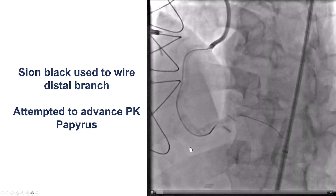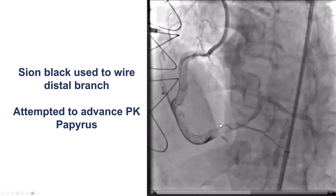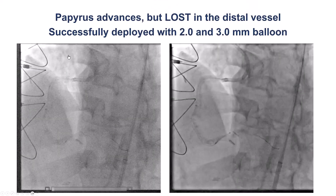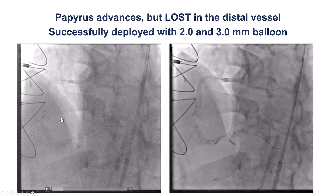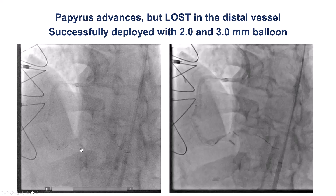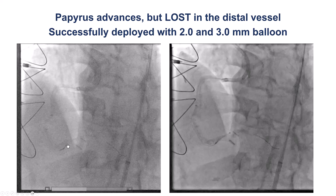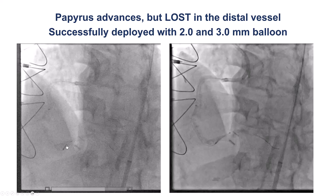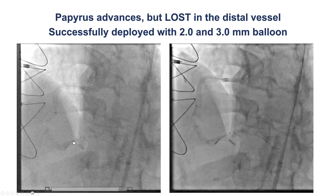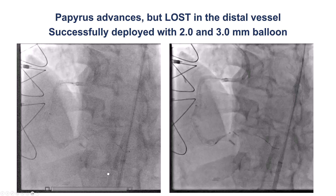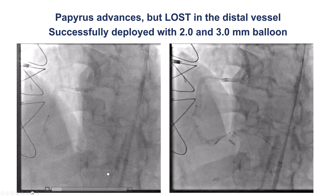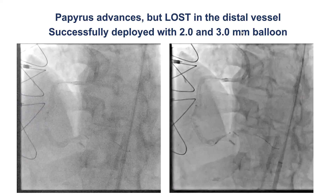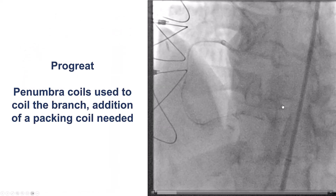How to take care of it? One thought was to advance a covered stent across the origin of this posterolateral branch. We tried to do that; however, there was so much calcium and tortuosity that the PK Papyrus stent was lost — it came off the balloon into the distal right coronary artery and could not reach further down. After this happened, we deployed it with a 2.0 and 3.1 mm balloon and decided to proceed with coiling.